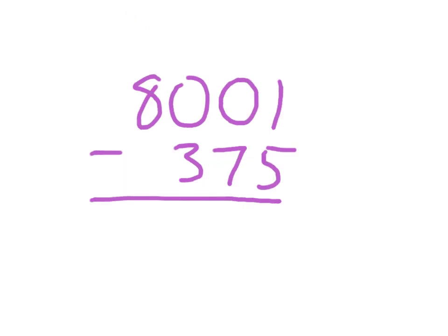Here's an example of a problem where we've got that regrouping across zeros. 1 minus 5 can't do it, so we start in our ones place like usual for a subtraction problem. We can't regroup from this tens place. There's no tens to regroup to that ones place. So we'll go to the next neighbor.